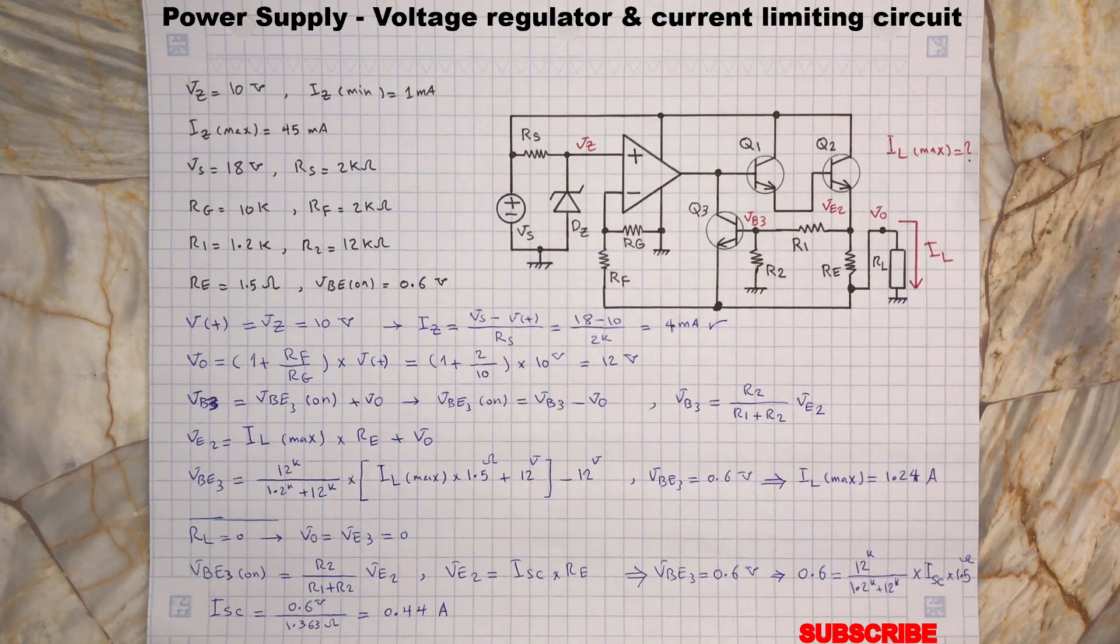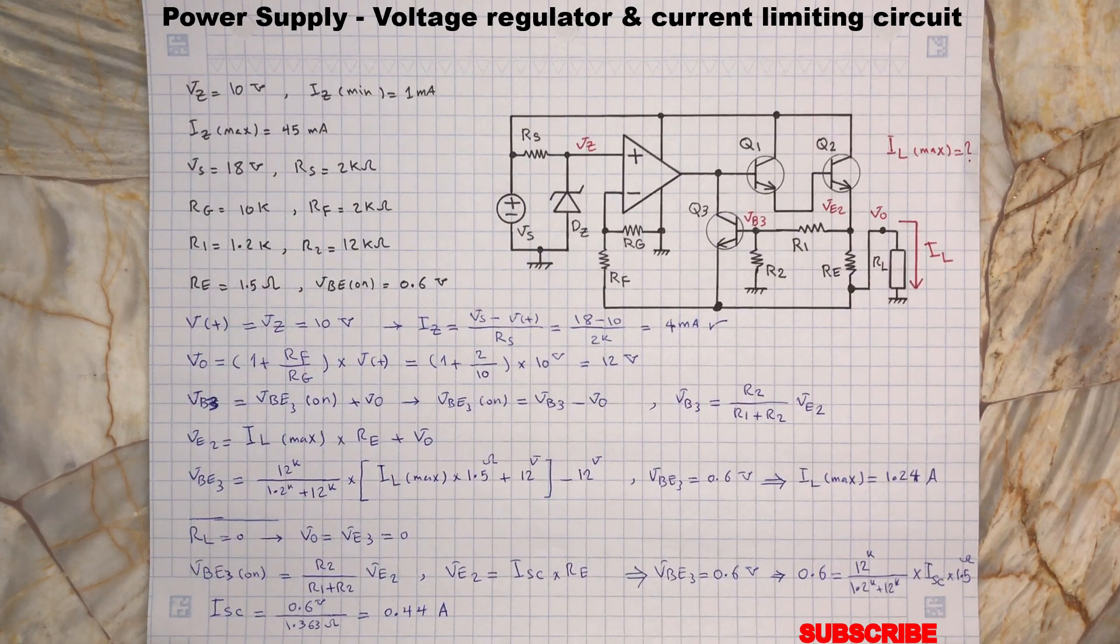So it means at the short circuit condition, the current limiting network will limit the output current to 0.44A and protects the circuit from overcurrent condition and prevents the possible damages to the electronic parts.